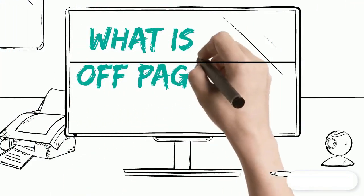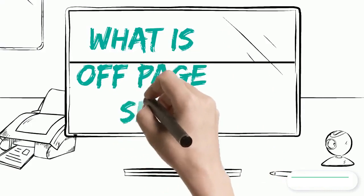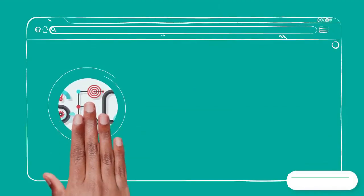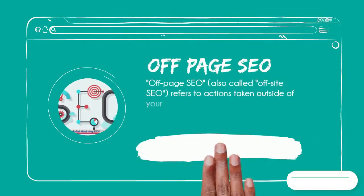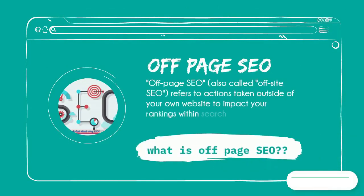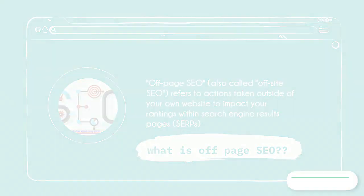What is off-page SEO? Off-page SEO, also called off-site SEO, refers to actions taken outside of your own website to impact your rankings within search engine results pages, SERPs.